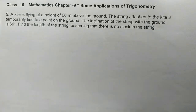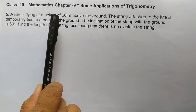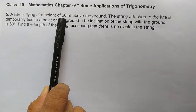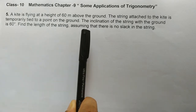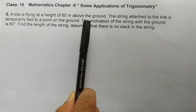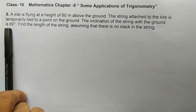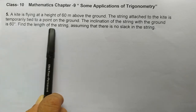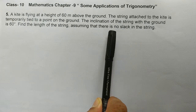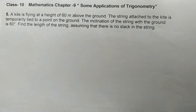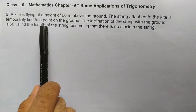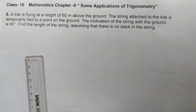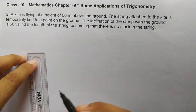Let's first understand what is given in the statement. A kite is flying at a height of 60 meters, and the string is making an angle of 60 degrees with the ground. We have to find out the length of the string, assuming there is no slack — meaning there is no looseness in the string; the string is very straight. Let's draw the figure first.